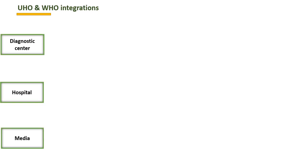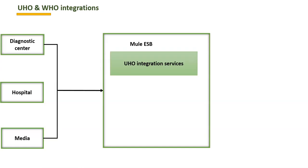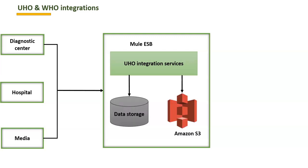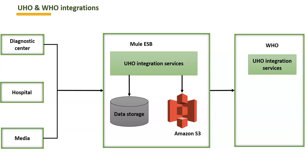As part of this course, we are going to build integrations between United Health Organization (UHO) and WHO. The USA government wants to build integrations between UHO and WHO to send COVID records to WHO and maintain COVID records. The end users will be diagnostic centers, hospitals, and media. They can enroll a COVID case, vaccinated case, death case, or recovered case. The media channels require reports from these data centers. We will be building UHO integration services for the United States of America to enroll COVID cases into their data storage. The identity document will be stored in Amazon S3, and the same record will be sent to WHO.